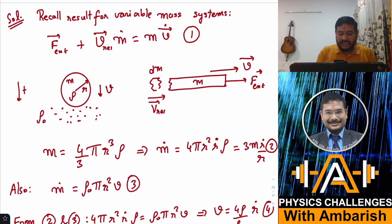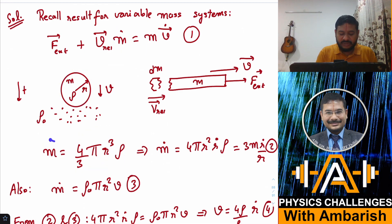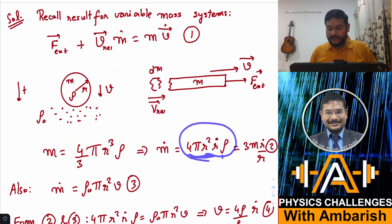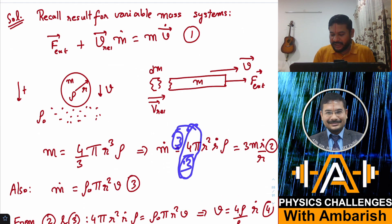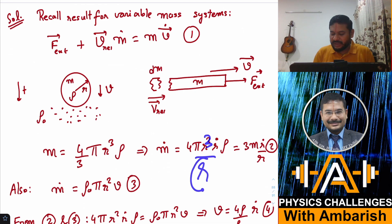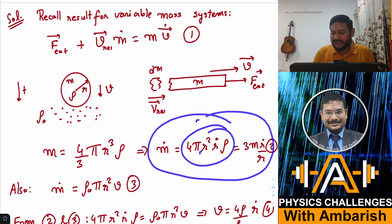Now I'll calculate a few things to substitute into the equation. The mass of the raindrop is (4/3)·π·r³·rho, so m_dot (rate of change of mass) by differentiating with respect to time gives 4·π·r²·r_dot·rho. I'm writing it in a special form deliberately: this becomes 3m·r_dot / r. This manipulation uses the fact that (4/3)·π·r³·rho equals m, so you divide and multiply appropriately. You'll see the usefulness of this form shortly.